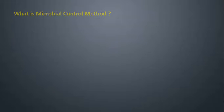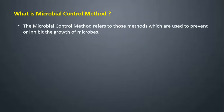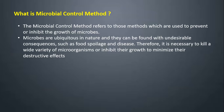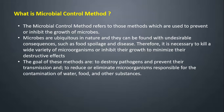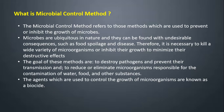The microbial control method refers to those methods which are used to prevent or inhibit the growth of microbes. Microbes are ubiquitous in nature and can be found with undesirable consequences such as food spoilage and disease. Therefore, it is necessary to kill a wide variety of microorganisms or inhibit their growth to minimize their destructive effects. The goal of these methods is to destroy pathogens and prevent their transmission, and to reduce or eliminate microorganisms responsible for contamination of water, food, and other substances. The agents used to control the growth of microorganisms are known as biocides.